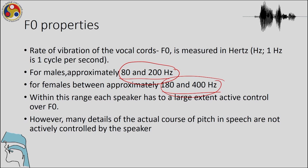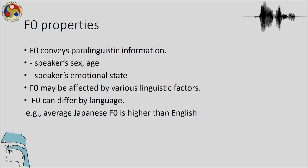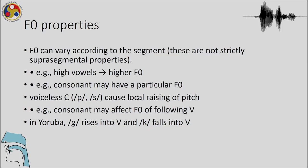Generally, for males F0 is around 80 to 200 Hz and for females around 180 to 400 Hz. Within this range, each speaker has largely active control over fundamental frequency; however, many details of the actual course of pitch in speech are not actively controlled. Fundamental frequency also conveys paralinguistic information such as emotions, happiness, sadness, the speaker's sex, age, and emotional state.